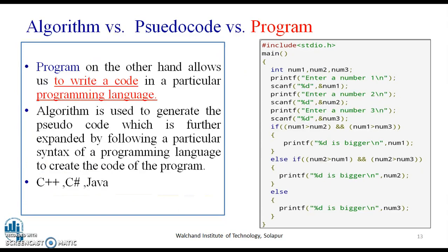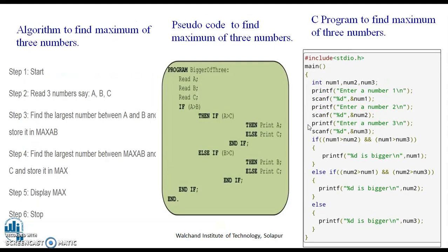Now further, the program. The program on the other hand allows us to write a code in a particular programming language like C or C++. This is the same program for finding the maximum of three numbers. Here, this program is written in a programming language and the syntaxes are mentioned here like variable declaration, the header files, including the specific format. Therefore, you can see in this diagram, the algorithm here is written in English language, pseudocode in high level programming language, whereas the C program basically uses the syntax, declaration, loop statements to perform the same task.